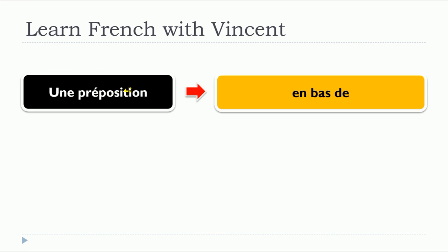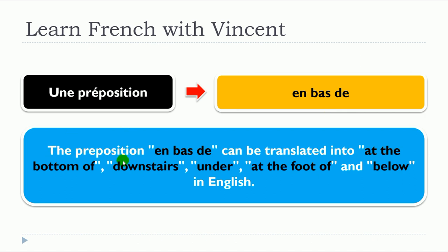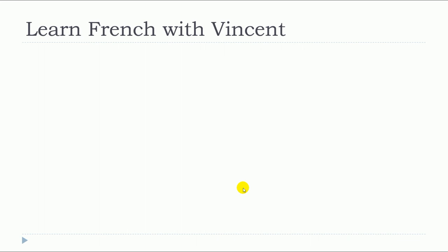So, this lesson is about the preposition « en bas de ». The preposition « en bas de » can be translated into « at the bottom of », « downstairs », « under », « at the foot of » and « below » in English.